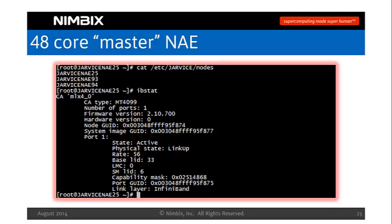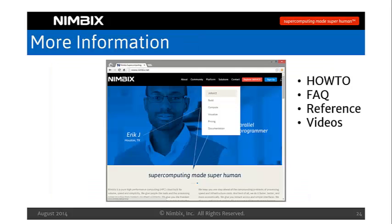To give you an idea of what it looks like inside the master NAE: here's an example where we've logged in and you can see the nodes file that has a list of all the NAE hosts that are network-addressable and already have established SSH trust between themselves and the master. You can use that for scripting or whatever you need to know which nodes are in the set. We're also running IB stat to demonstrate InfiniBand connectivity on this node. On our website, we've created a great developer section with platform documentation including how-tos, FAQs, reference material, and videos.